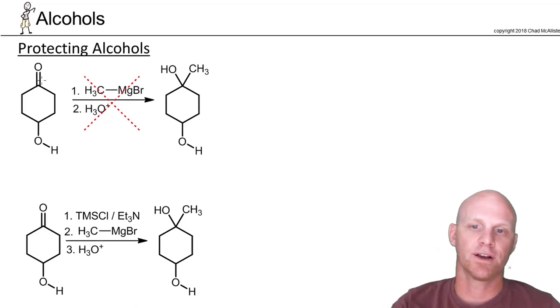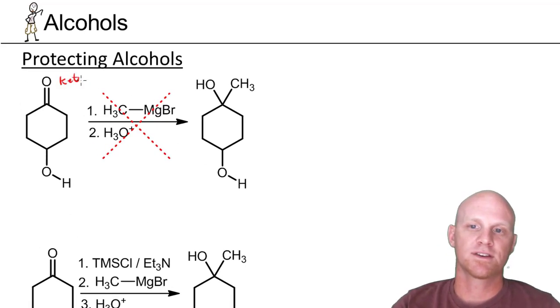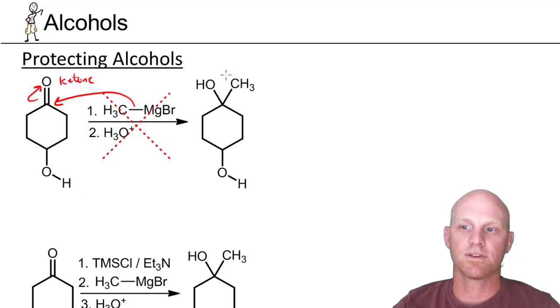Now let's say we had a ketone here, and with this ketone we wanted to do Grignard addition and add this methyl group and have this methyl group come and attack the ketone, kick the electrons up, and form this lovely alcohol product right here.